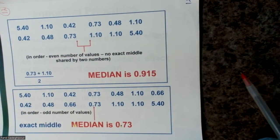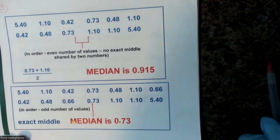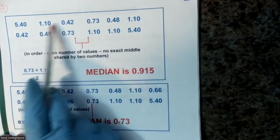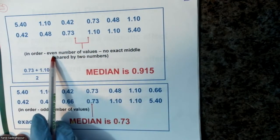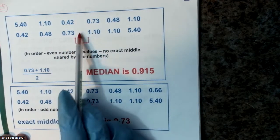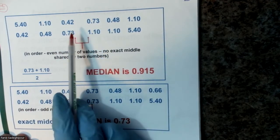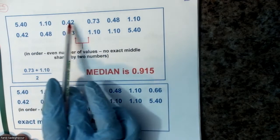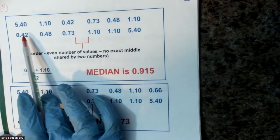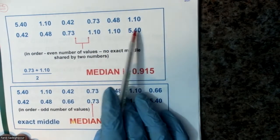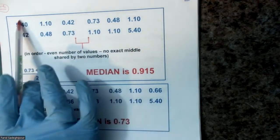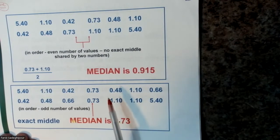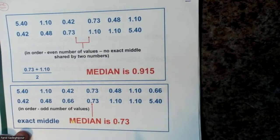For example, if we have an even number of data values — say 12 numbers — we cannot find a single number exactly in the middle, so we take the average of the two middle values. For an odd count, the median is the single middle number. For instance, with nine numbers arranged in order, the median is 0.723.